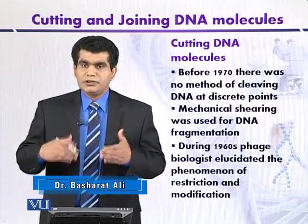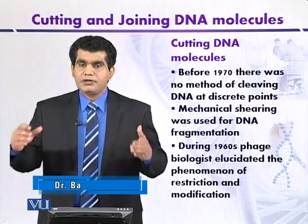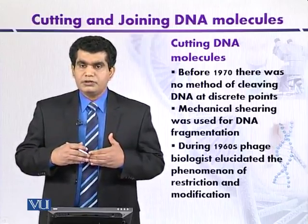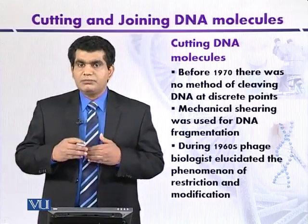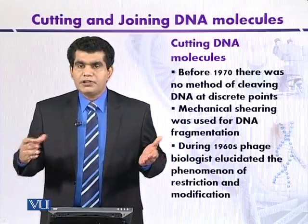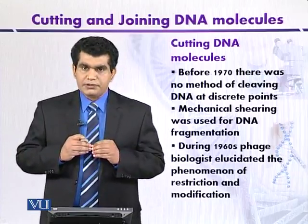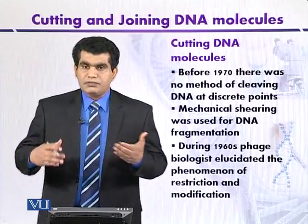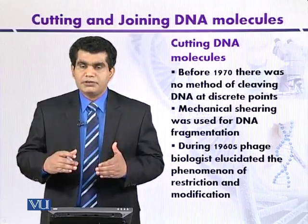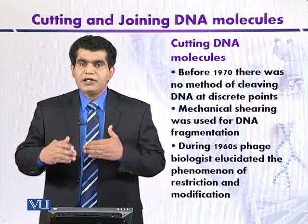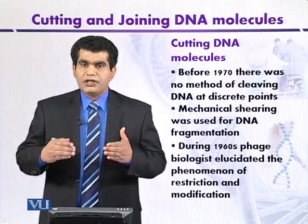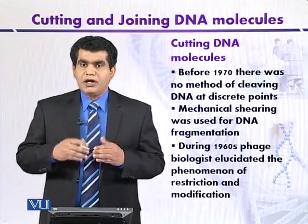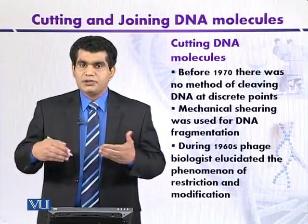The only technique that was somewhat applicable was mechanical shearing of DNA, where DNA can be disintegrated in solution into small fragments. Initially, this mechanical disintegration produced shorter fragments of between 300 to 400 base pairs, which were not preferable. Later on, this technique was revised, and scientists were able to produce comparatively larger DNA fragments. When DNA is subjected to high stirring — like 1500 revolutions per minute continued for half an hour — larger fragments of up to 8 kilobases or 8,000 base pairs can be generated.